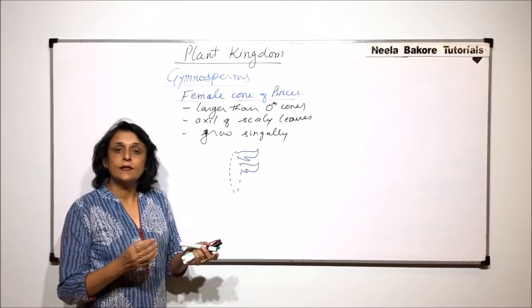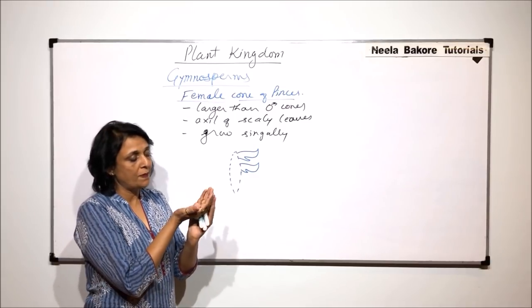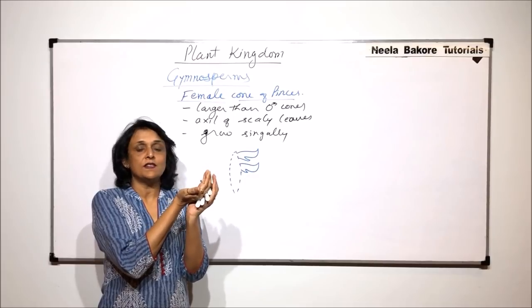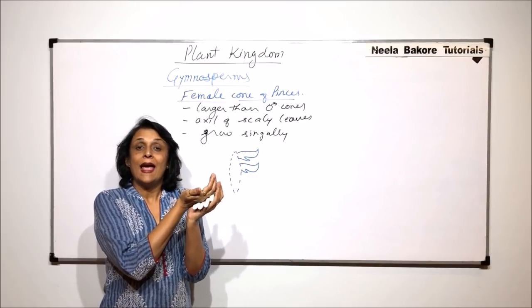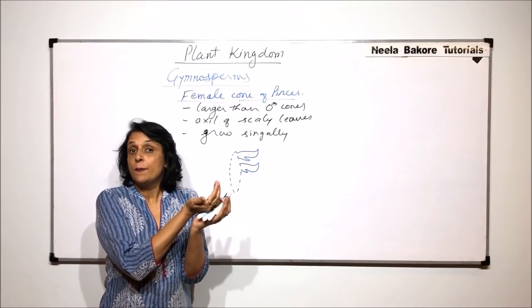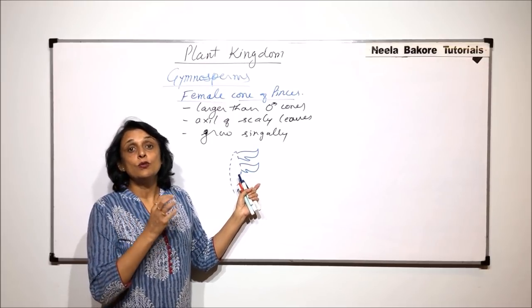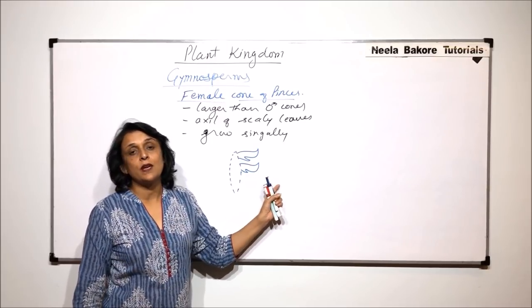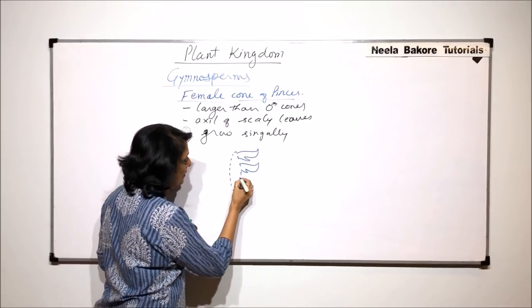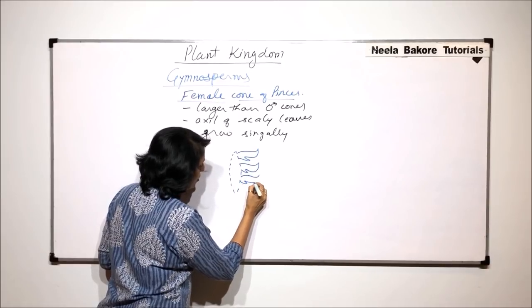The first year cones and the second year cones are there. How do we differentiate? These megasporophylls are placed one over the other. If it is the first year cone, these leaves are going to be very close to each other. As the cone grows and matures, these leaves get a little spaced because now the female gamete is going to be ready and it is going to receive those pollen grains which can fertilize the egg. The distance between the leaves keeps changing.